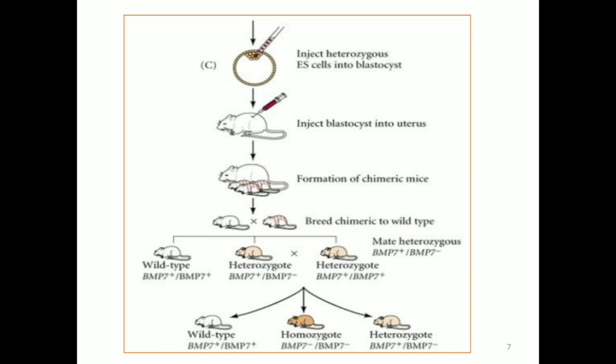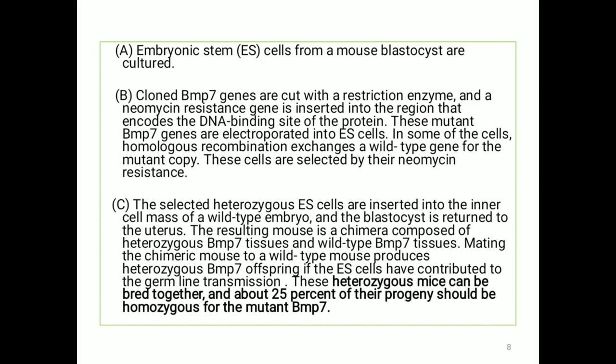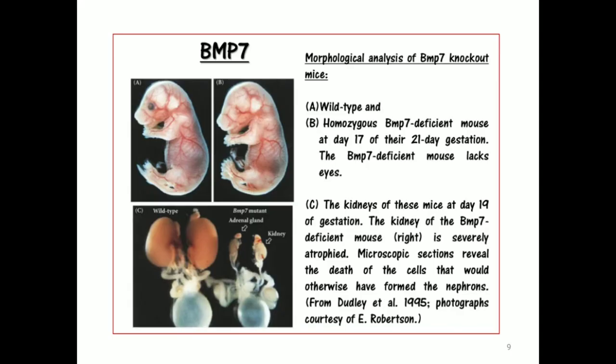By breeding the heterozygous mice, we will get 25% of their progeny as homozygous mutants of BMP7. This is the morphological analysis of BMP7 knockout mice. If the BMP7 gene is knocked out, the resultant mice will lack eyes and the kidney is also atrophied. Figure A represents the wild type mouse and figure B represents the knockout mouse with BMP7 gene deficient — the eye is present in figure A but absent in figure B. In figure C, the wild type mouse's kidney is healthy, but the BMP7 knockout mouse's kidney is atrophied.